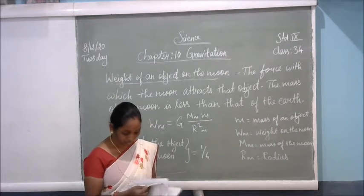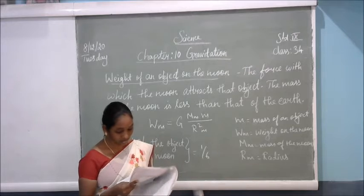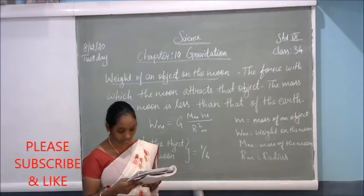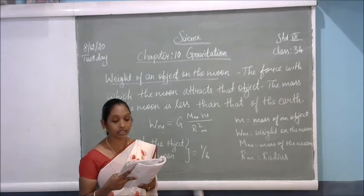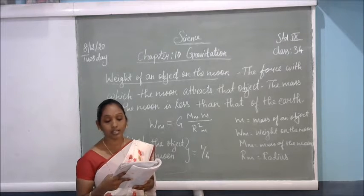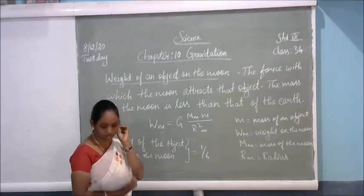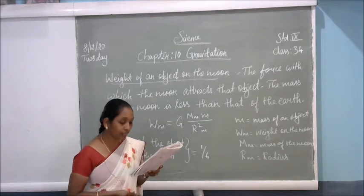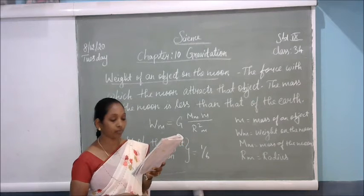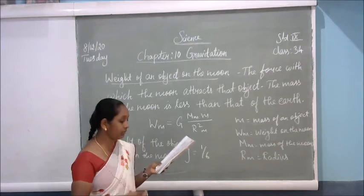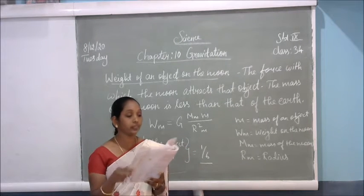Take out your textbook, page number 137 — weight of an object on the moon. The weight of an object on the earth is the force with which the earth attracts the object. In the same way, the weight of an object on the moon is the force with which the moon attracts the object. The mass of the moon is less than that of the earth. Due to this, the moon exerts lesser force of attraction on objects. The values given are 7.36 × 10²² kilogram for mass of the moon and 1.74 × 10⁶ meter for radius of the moon. If we calculate, we get 1/6. So the weight of an object on the moon is equal to 1/6 of its weight on the earth.